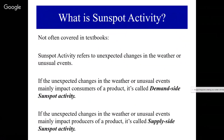The demand for gasoline increased because people believed there'd be a massive shortage. On the other hand, if a famous actor or actress or singer does something really offensive to a lot of people, suddenly the demand for their movies and music shifts very far to the left. If that actor or actress had just had a better publicist and not done that, everything would have been fine. Those are examples of demand-side sunspot activity.